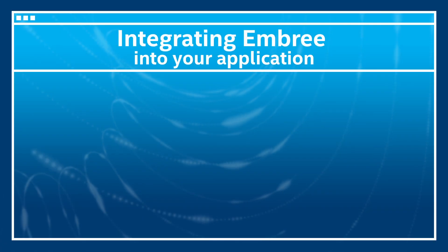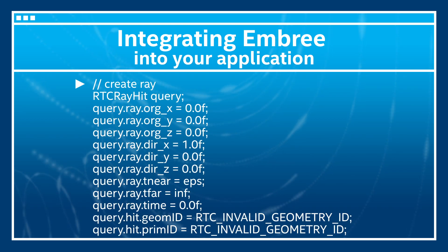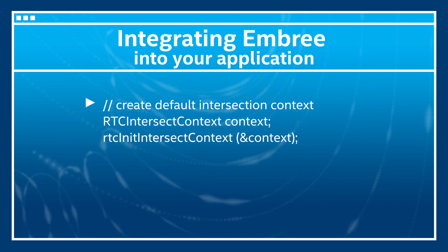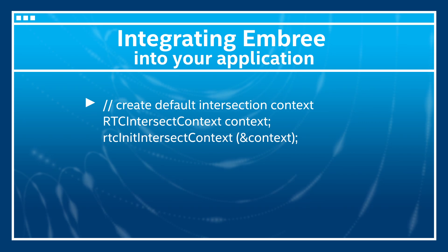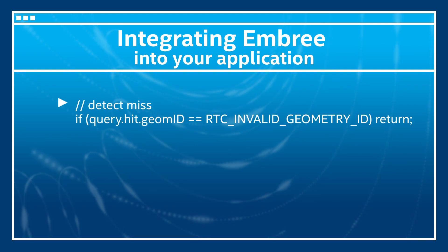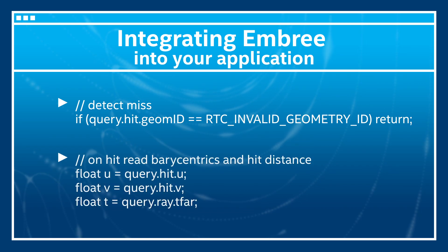To trace a ray, just create a ray query and fill out the ray components such as origin and direction, and initialize some hit components. Also required is an intersection context, which is an object needed for advanced use cases — we just created a default intersection context here. Now you can use the RTC intersect1 function to trace the ray through the scene. After tracing the ray, you can check if some geometry got hit and read out potential barycentric hit coordinates and hit distance.